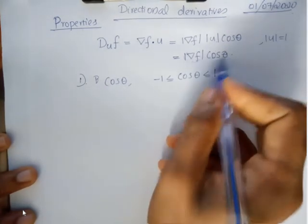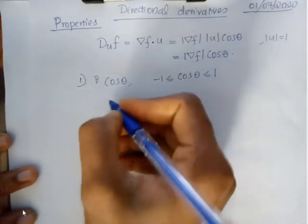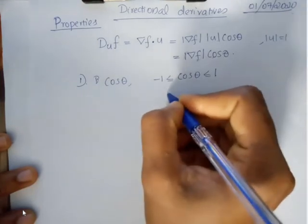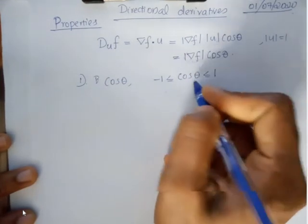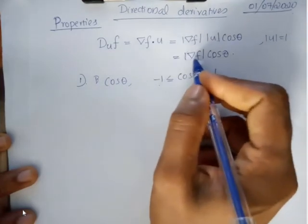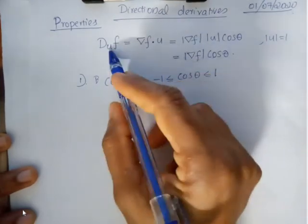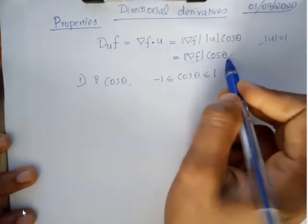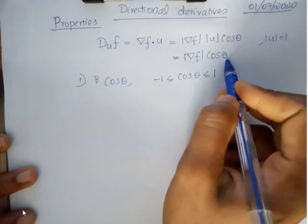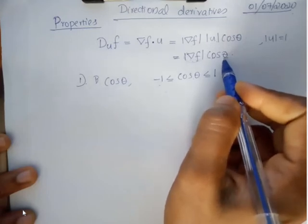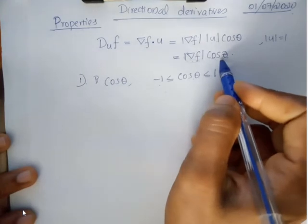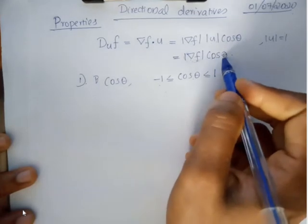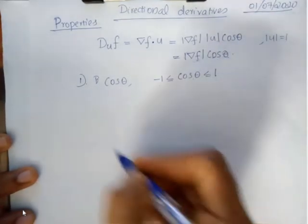The lowest value occurs when cos θ equals -1. So we can say: when cos θ = 1, the value is |∇f|, and when cos θ = -1, the value is -|∇f|. Therefore, D_u f has a maximum value when cos θ = 1, that is when θ = 0, and a minimum value when cos θ = -1, that is when θ = π.